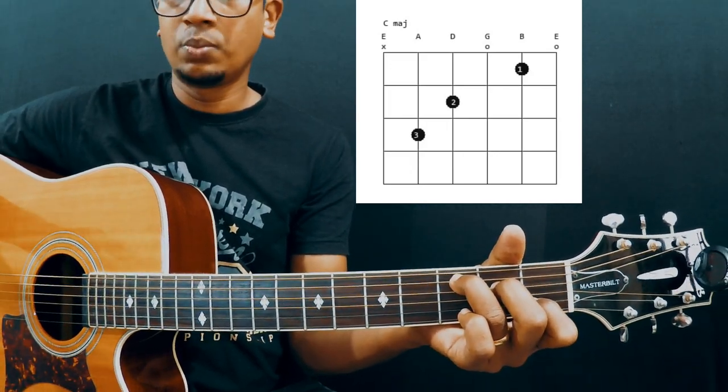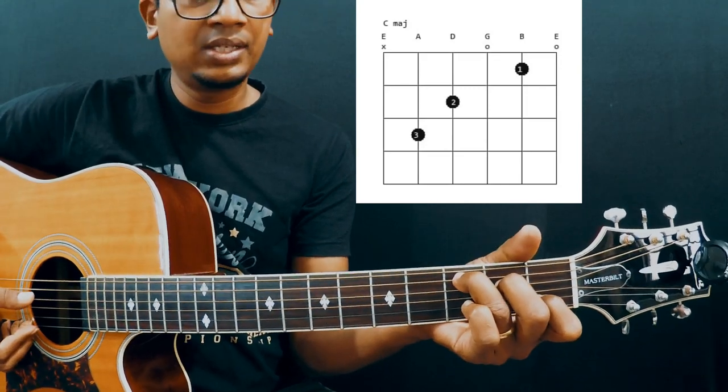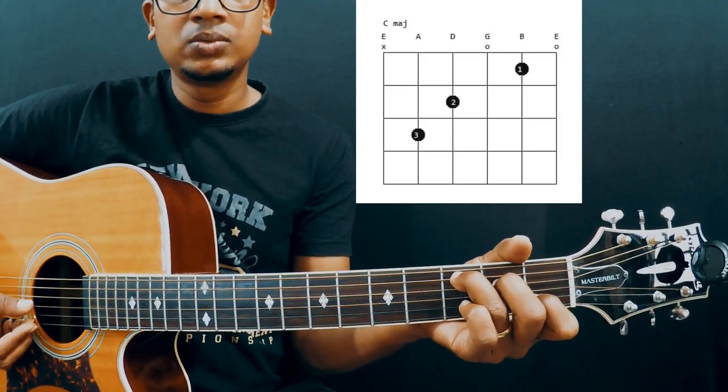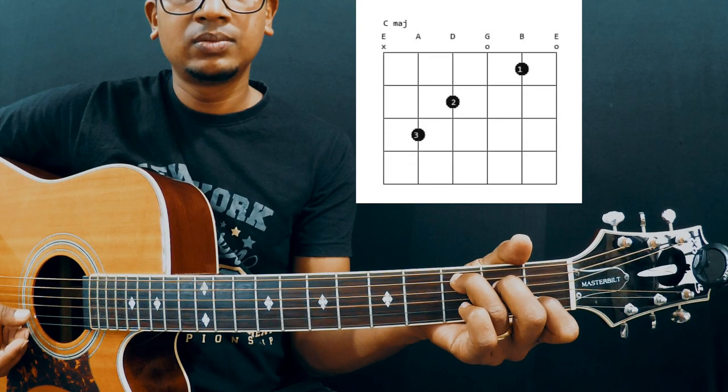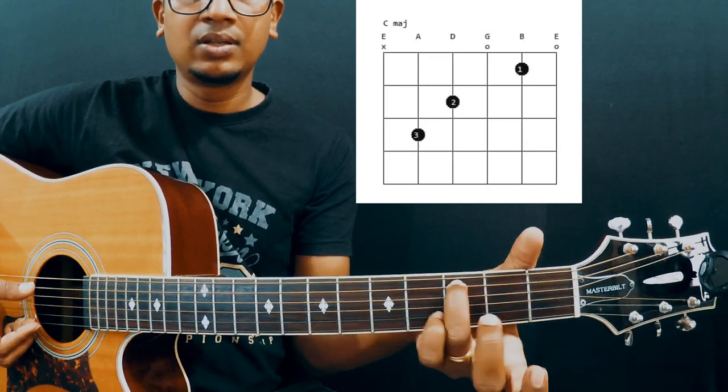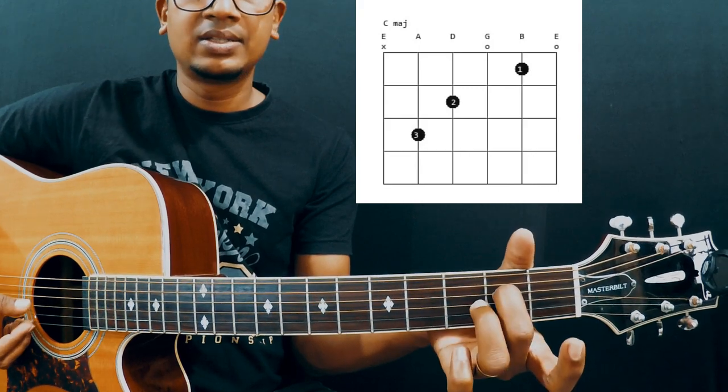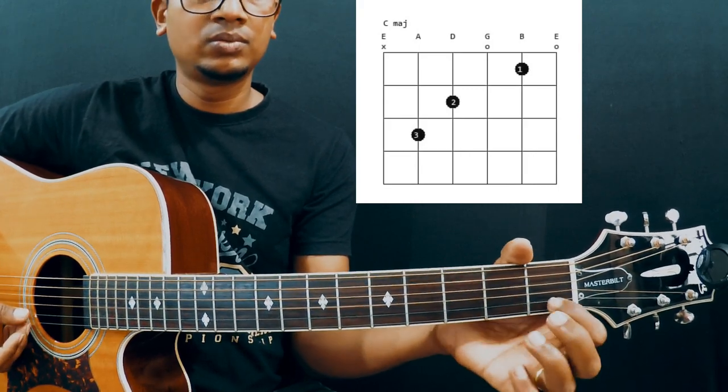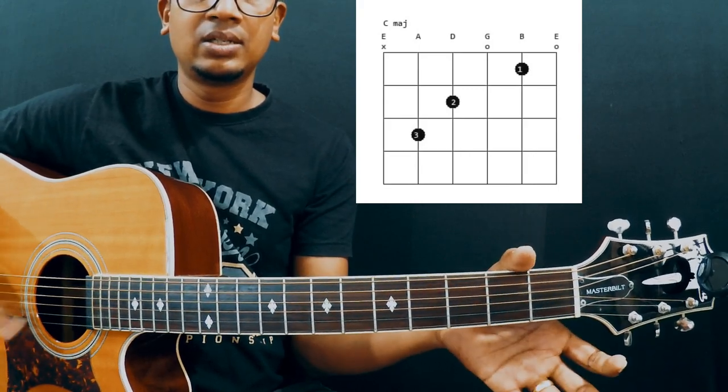And then 2nd string 1st fret with your 4th finger, and then 1st string open. So 3, 2, 0, 1st fret, and then 0. Repeat: 3rd fret, 2nd fret, 0, 1st fret, 0.